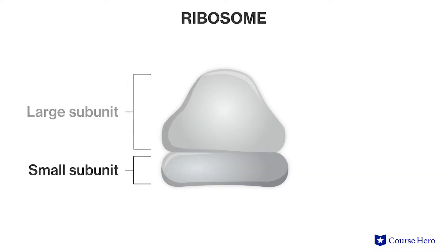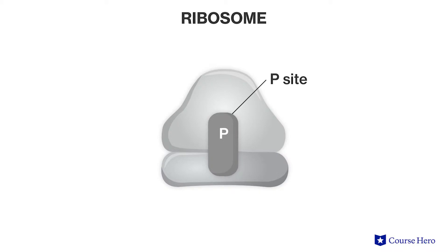Before we look at the steps involved in translation in detail, let's briefly review the structure of a ribosome, which reflects its function of bringing together the mRNA with the tRNAs carrying amino acids. Ribosomes consist of small and large subunits that come together when it is time to synthesize proteins. In addition to a binding site for mRNA found in the small subunit, each large subunit has three binding sites for tRNA. The P site holds the tRNA carrying the growing polypeptide chain, while the A site holds the tRNA carrying the next amino acid.